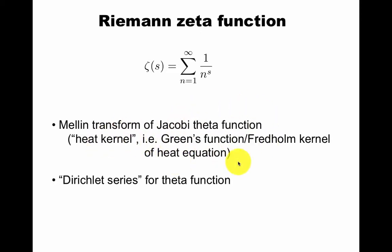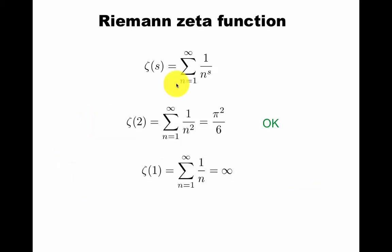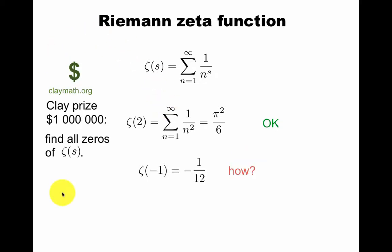If you're used to sums, you might recognize this sum for z equals one as being the Riemann zeta function. This function has many uses in physics. It's the Mellin transform of Jacobi theta function, which is in itself a heat kernel. In its agreement's function or freedom kernel of the heat equation, number theory. The Riemann zeta function is the Dirichlet series for the theta function, which can be thought of as essentially the same statement as the one above. Even if you didn't know about zeta, you should be familiar with this kind of sum. So this looks okay, but this looks pretty bad.